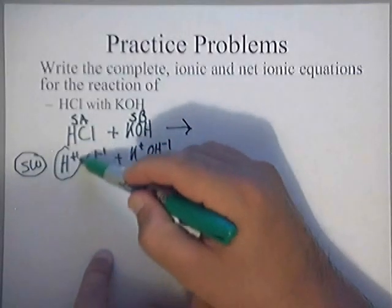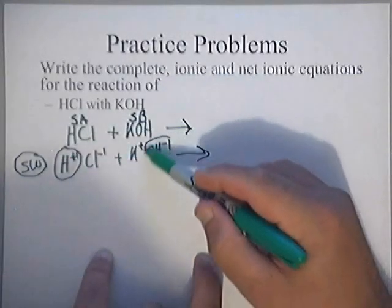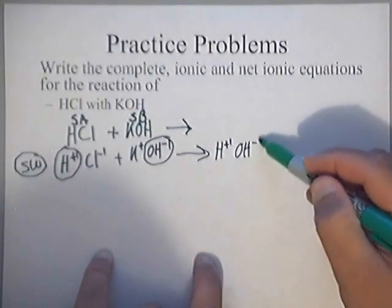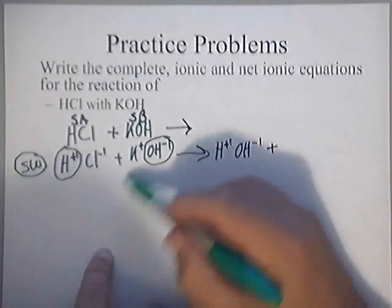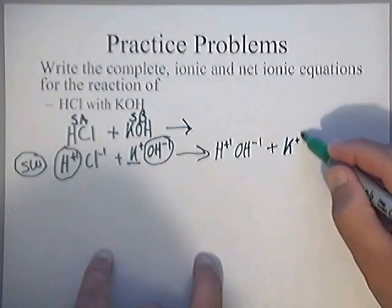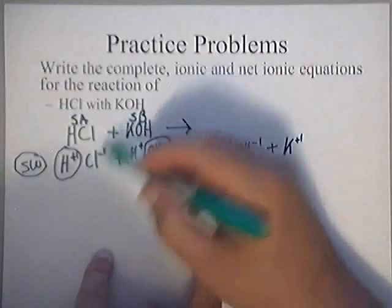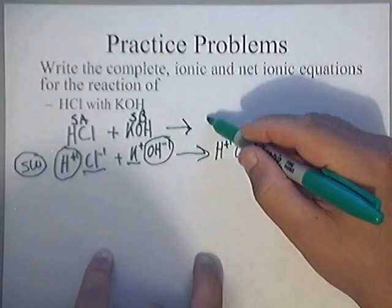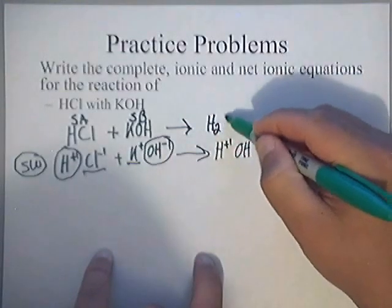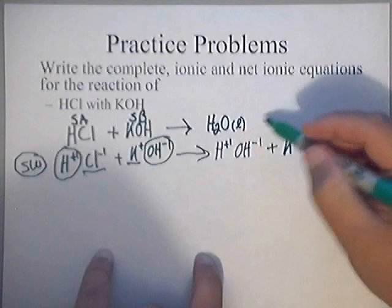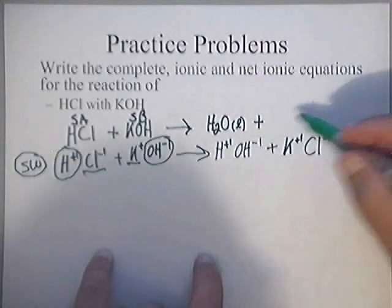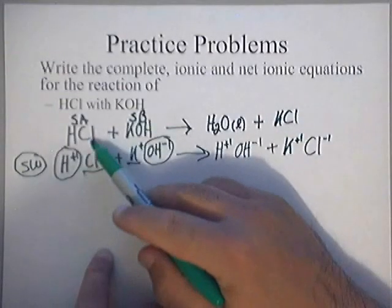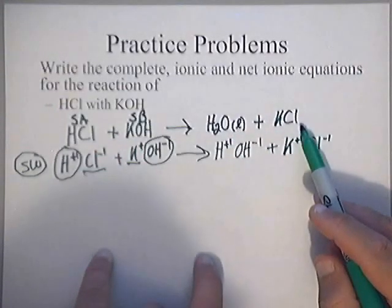I put a different positive with a different negative. So I'm going to put this H⁺ with this OH⁻, and I'm going to put this K⁺ with this Cl⁻. That gives me HOH, which is H₂O — that's a liquid. And it gives me a salt of potassium chloride, which is soluble, so it's aqueous.